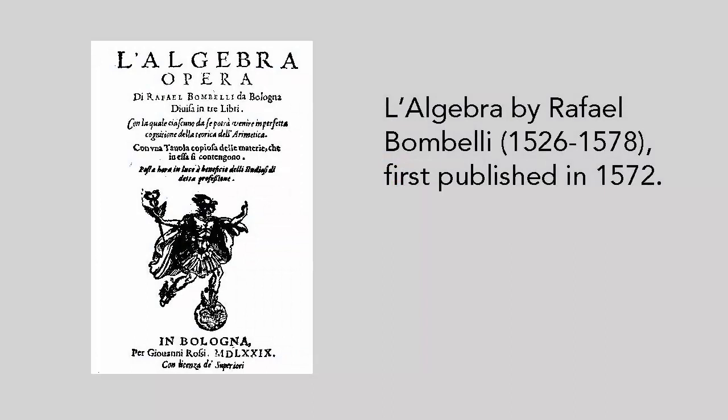The first to entertain the actual existence of numbers that allowed for taking the square root of negative real numbers and who set out rules for dealing with these novelties was the Italian mathematician Raphael Bombelli. In his Algebra, published in 1572, Bombelli became the first European to clearly state ways of doing arithmetic with negative numbers that made sense, such as minus times plus equals minus.